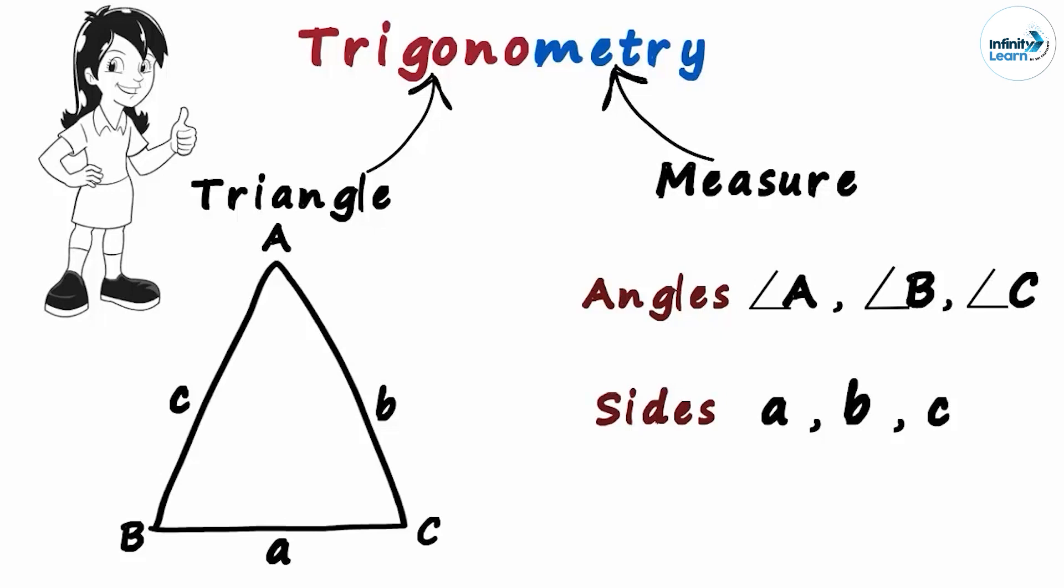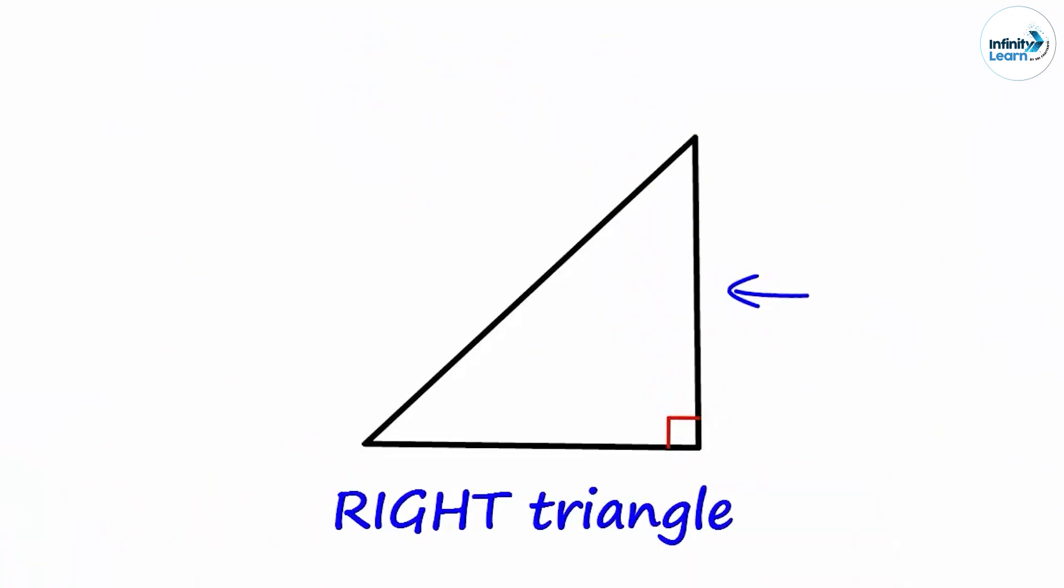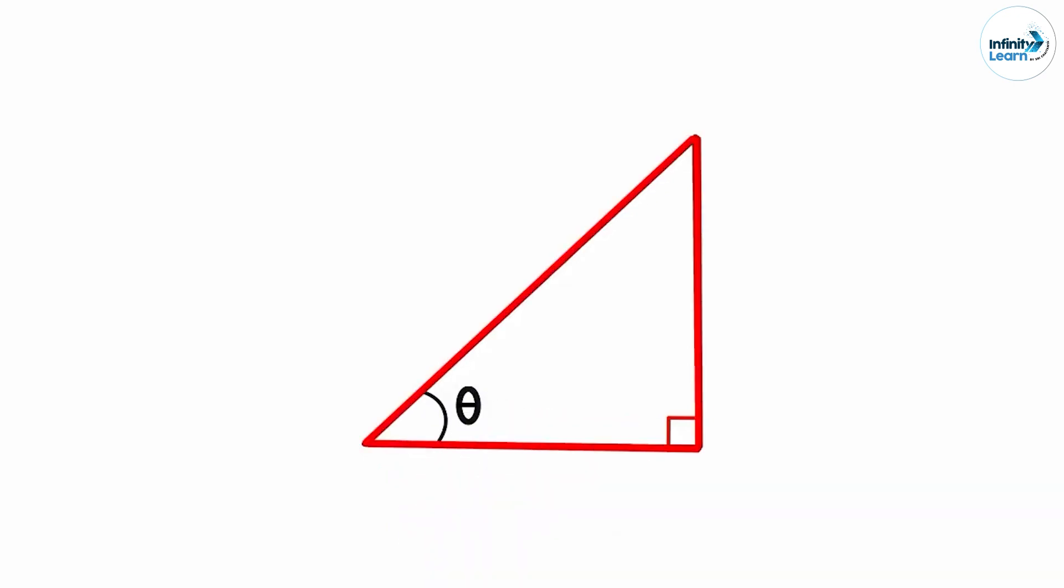Actually, it gets a bit simpler as Trigonometry generally deals with only one kind of triangle: a right angled triangle, which is also referred to as a right triangle. This right triangle is right angled at this vertex. The good news is that one angle is known and only two remain. This one and this one. Let this angle be theta.